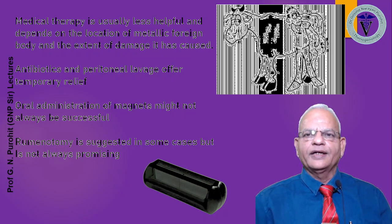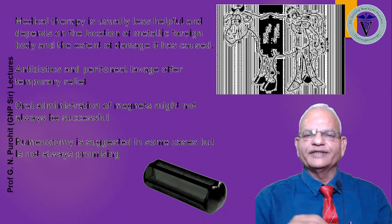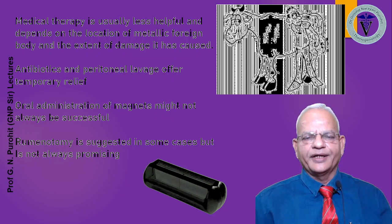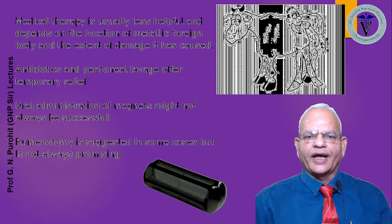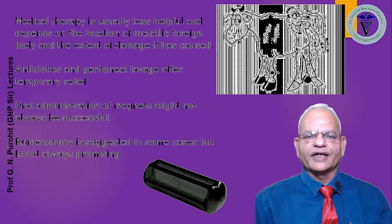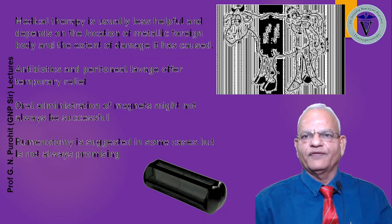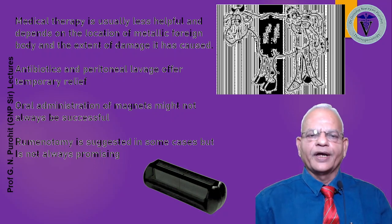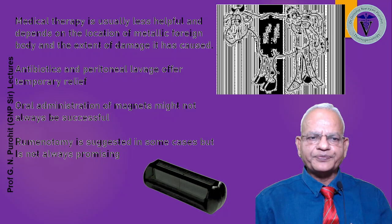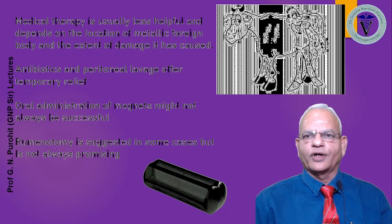The animal may develop fever, and after some time may recover although the foreign body remains there or may have moved. Antibiotics and peritoneal lavage offer only temporary relief. Oral administration of magnets has been tried in many reports but may not always be successful. These magnets are passed into the reticulum to attract foreign nails or pieces of wire. After 24 to 48 hours of administering an oral rumen magnet, this should be evaluated — pieces that have already pierced the reticulum will not attach to the magnet.